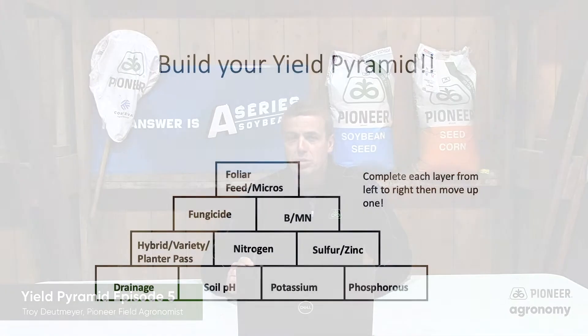What we've learned over the years is if we have our foundation blocks taken care of in our Yield Pyramid, our nitrogen use efficiency can improve drastically. What I mean by nitrogen use efficiency is the amount of nitrogen it takes to grow a bushel of corn.